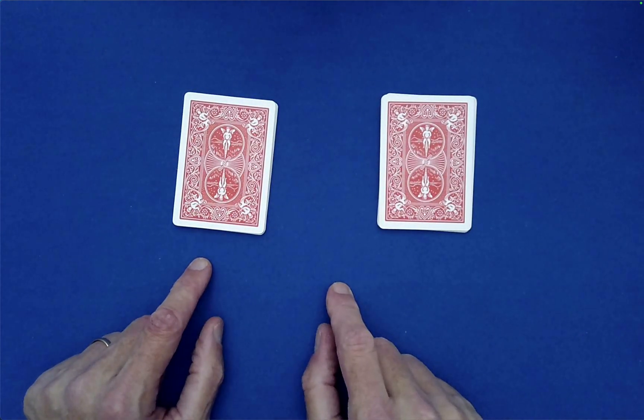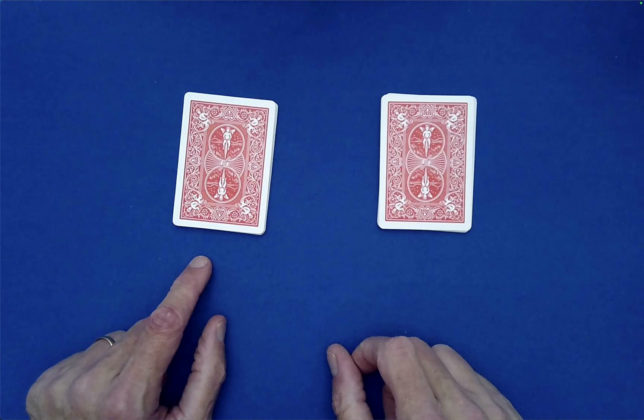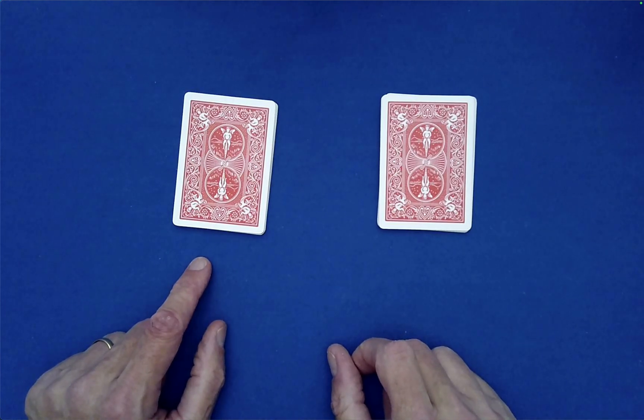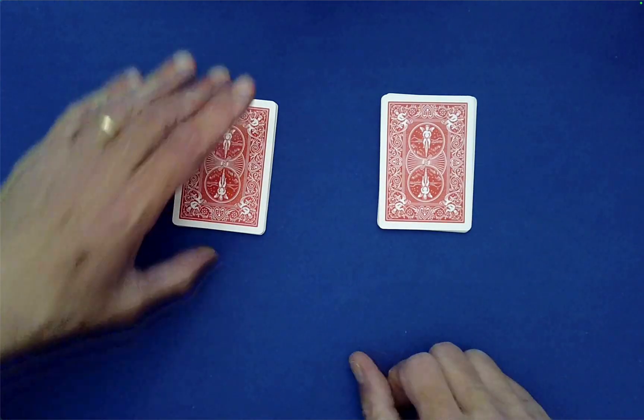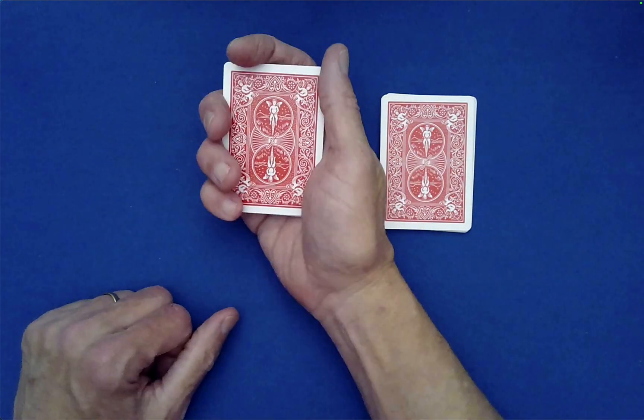And now the spectator says, turn around. I'm ready for you to face me. And then they just need to hand you either one of these piles. They can choose. So maybe they'll hand you this one here.